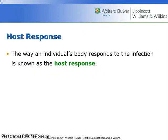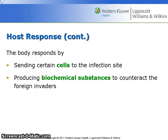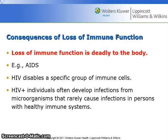The way an individual's body responds to the infection is known as the host response. The body responds by sending certain cells to the infection site and producing biochemical substances to counteract the foreign invaders. Loss of immune function is deadly to the body. An example is AIDS, where the HIV disables a specific group of immune cells, and HIV-positive individuals often develop infections from microorganisms that rarely cause infections in persons with healthy immune systems.